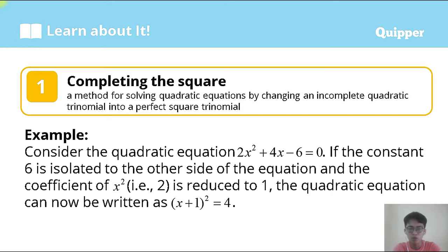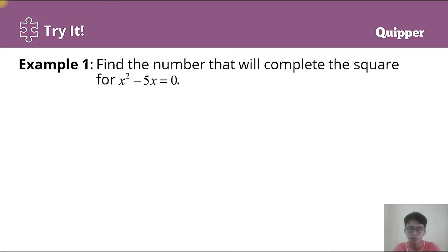According to the rule, you should first isolate the constant term and then reduce the coefficient a of x² to 1. By reducing a to 1 and isolating 6, which becomes positive 6, we arrive at x² + 2x + 1 = 4. So let's try performing completing the square with Example 1.